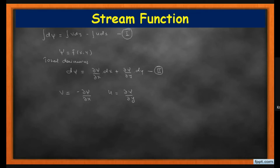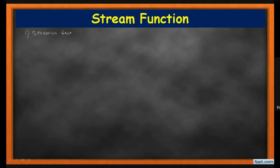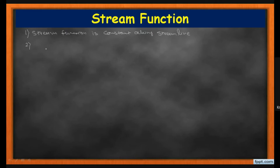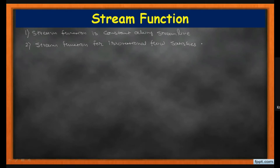Now we write the three characteristics of the stream function. First, the stream function is constant along a streamline. Second, the stream function for irrotational flow satisfies the Laplace equation. Third, the stream function satisfies the continuity equation.